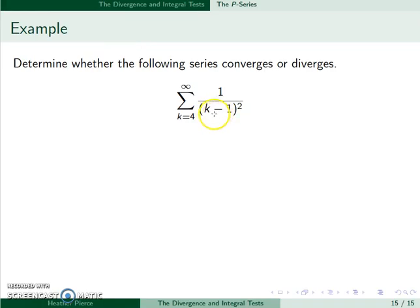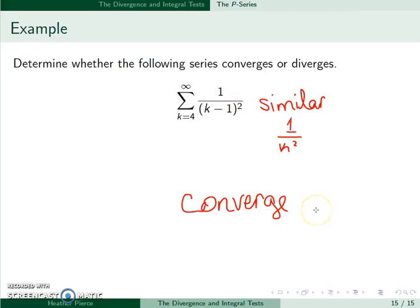This one looks slightly different since it has a k minus 1 squared. However, we can see that this will be very similar to 1 over k squared. And in particular, it will follow the same rule. This will converge since 2 is bigger than 1.